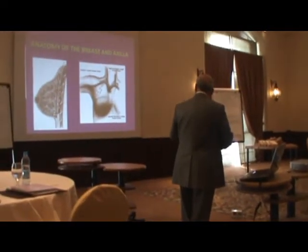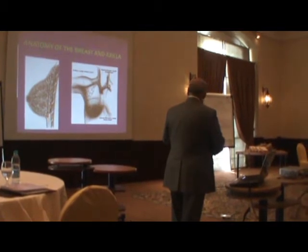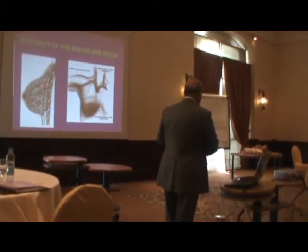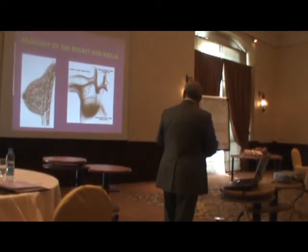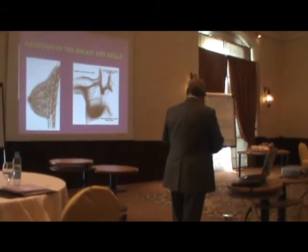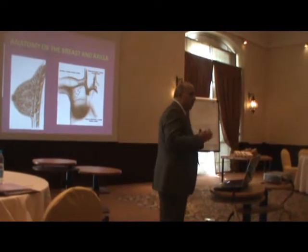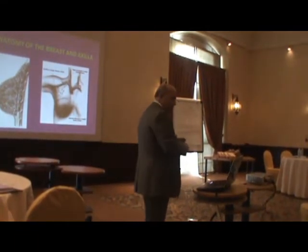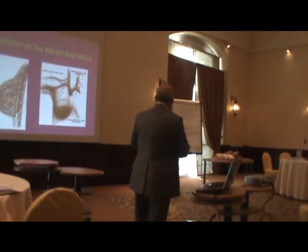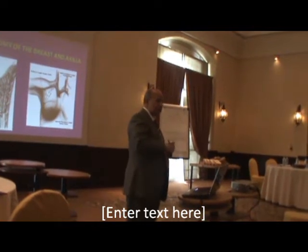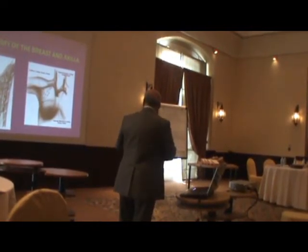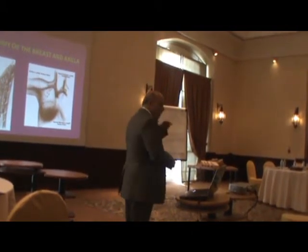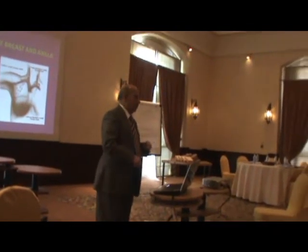The fibrous tissue divides the breast into compartments, extending strands to the pectoral fascia and to the skin. This fibrous tissue collectively is called Cooper's ligament, and it works as an internal bra for the lady to support the breast — with time, it stretches and the breast will prolapse. Cooper's ligament is important because it gives indirect signs of malignancy. When there is a tumor in this area, it will pull on the strand, causing tethering or puckering of the overlying skin, or dimpling of the skin.